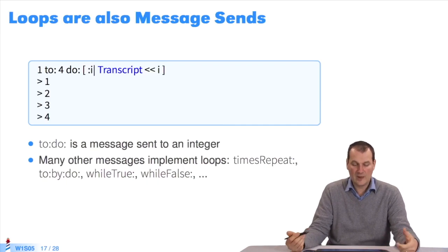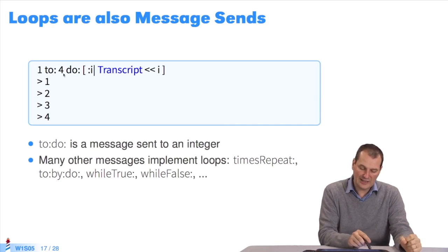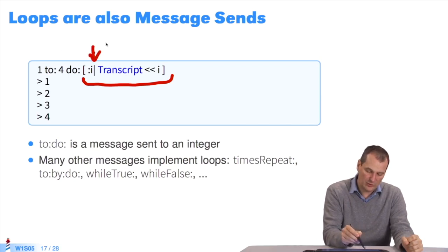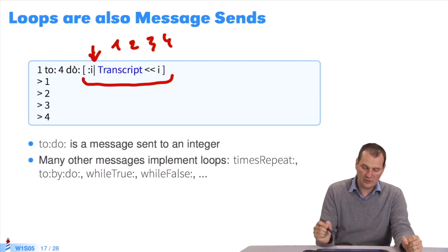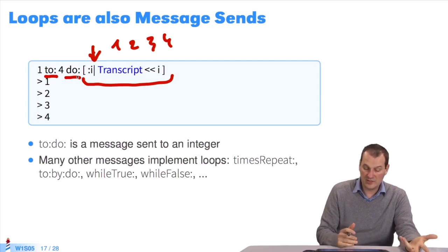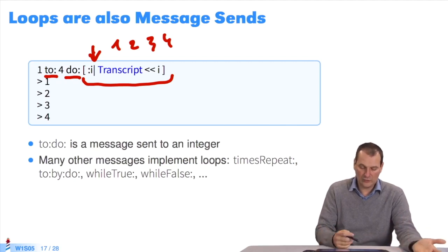So conditions are messages. Loops are messages too. Here, I'll make a loop from 1 to 4 — what do I do? A block, an anonymous method. I'm saying I want it to show the value of i, and it will take the value of 1, 2, 3, 4. You can see that to do is a keyword message that takes the form of a loop. There are other loops in Faro: times repeat, to by do, and so on — we'll look at them all. But again, these are messages. To do is sent to object 1 with 4 as parameter and a block.